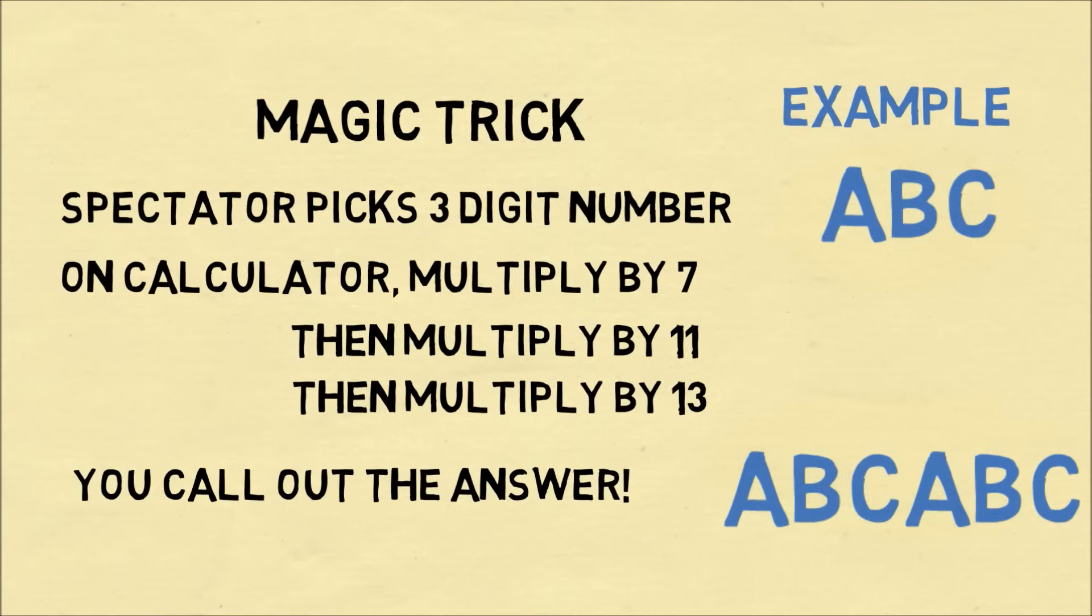And there's a reason for this. It's because 7 times 11 times 13 is 1001, and that's what you get when you multiply any three-digit number by 1001.